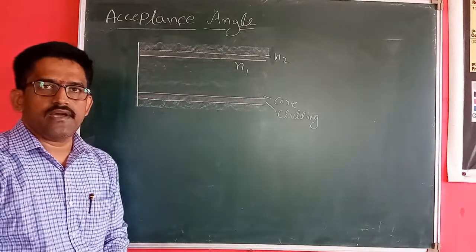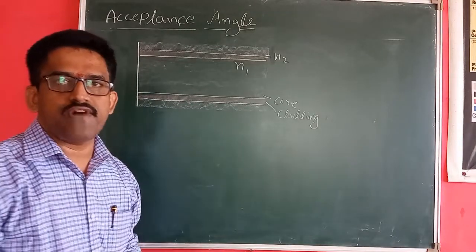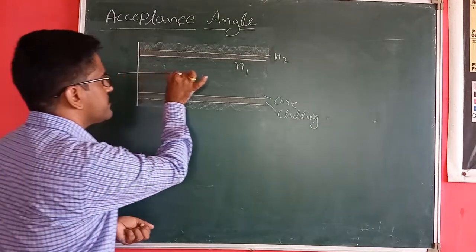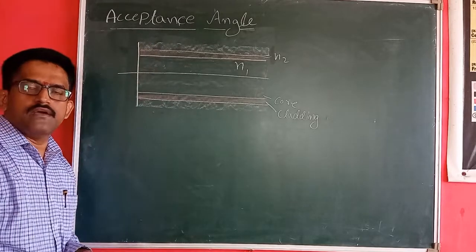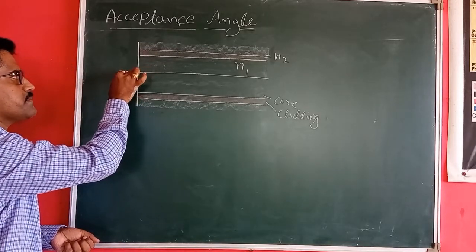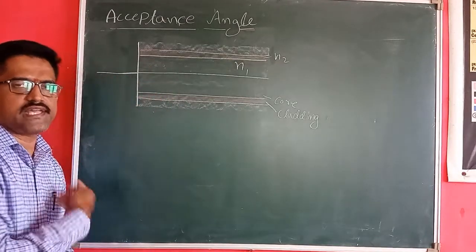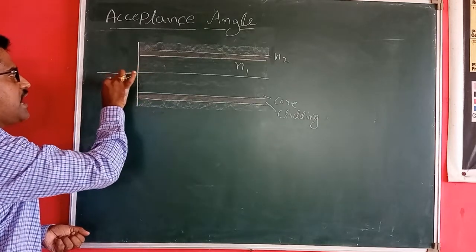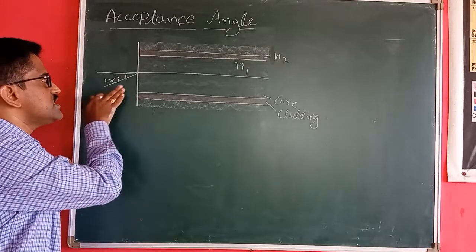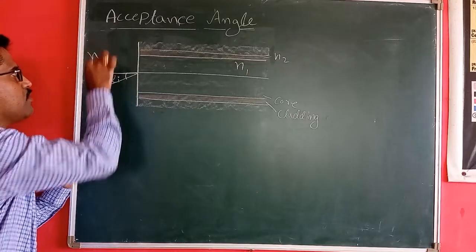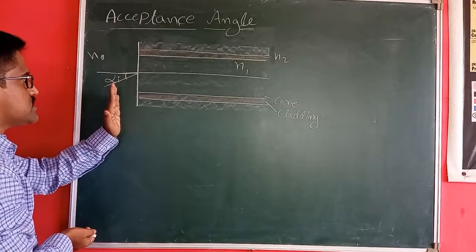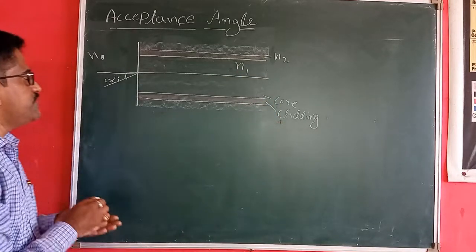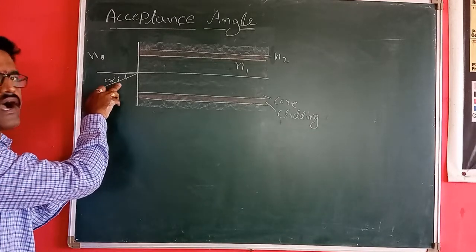Good morning. Now we study about the accepting angle in an optical fiber. The accepting angle is the range of angles incident on this fiber which can be coupled into the fiber. We consider alpha_i as an incident angle which is incident on this optical fiber from N0. N0 is the refractive index of air, N1 is the refractive index of the core, and N2 is the refractive index of the cladding.